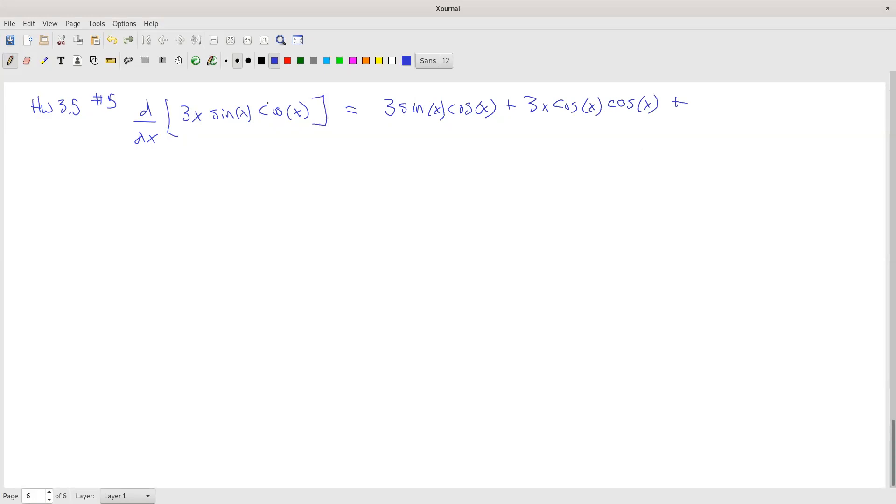And then the last, I take the derivative of the third function and leave the other two there. So I still have 3x, sine x, not touching those, and the derivative of cosine x is negative sine of x.